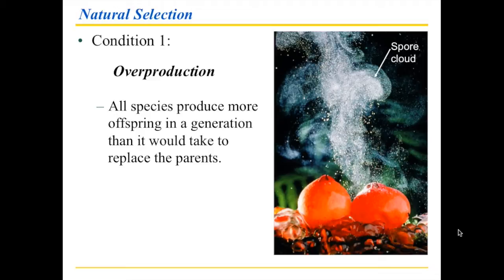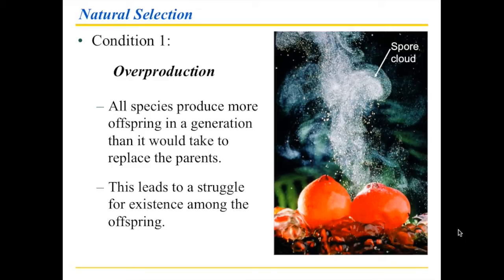Even if you go with species that tend to be slow-breeding — where the generation time is long or the gestation period is long, such as elephants or whales — you'll find that over a reproductive lifetime they still overproduce, meaning they produce more individuals than the two parents involved. And as a consequence, this leads to a struggle for existence.